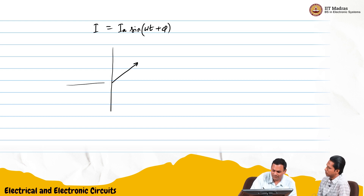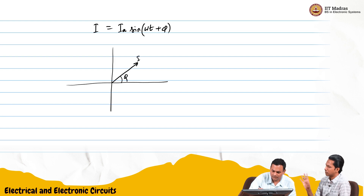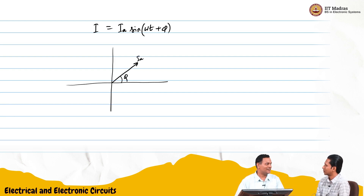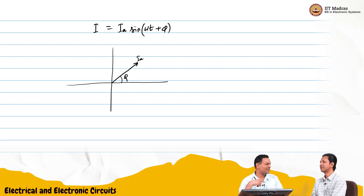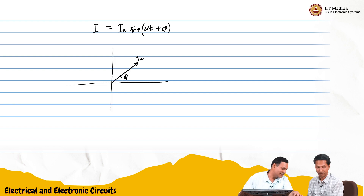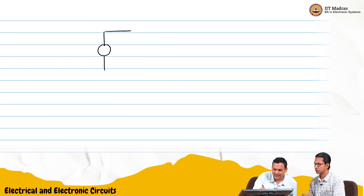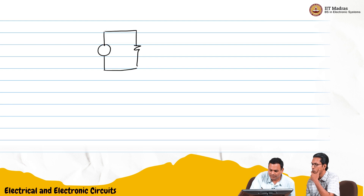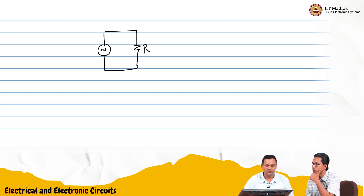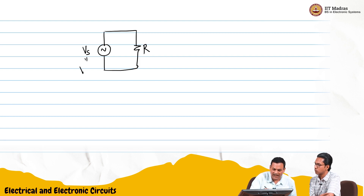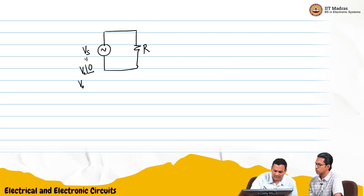Let us take an example. Maybe a source driving a capacitor — but shall we do the resistor first? Because the resistor may be a little bit easier. So let us do a resistor first, then we will do the capacitor. I am going to take a sinusoidal voltage. This is V∠0, so I will call this V_s. This is V_a sin(ωt).